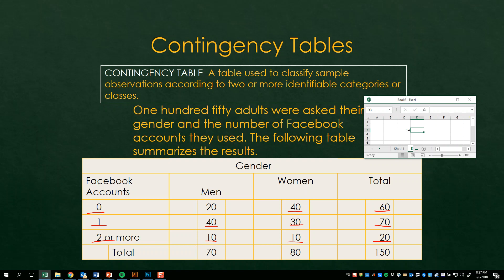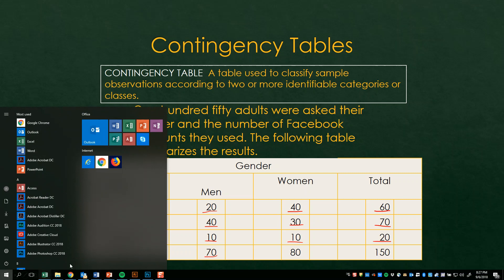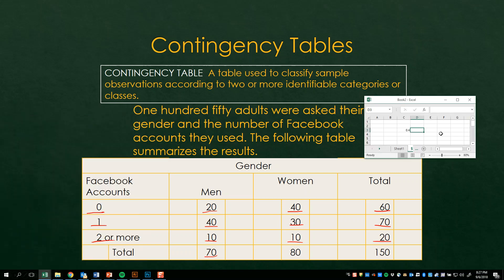What is the probability of a man having zero Facebook accounts? The way you calculate that is you take 20 divided by 70. Let's pull that up. 20 divided by 70 gives you a probability of 0.2857, or you can round that up to 0.29 — the probability of a man not having any Facebook accounts.